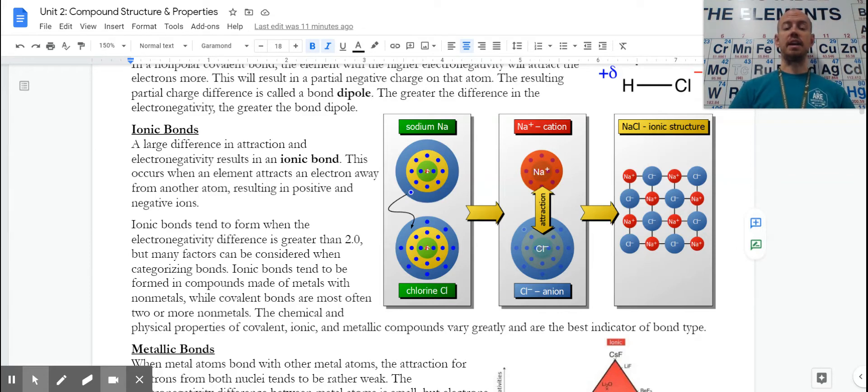To make our cations and anions, we have a process that occurs. In an ionic compound, you're going to have a large difference in electronegativity. It's going to be greater than two.